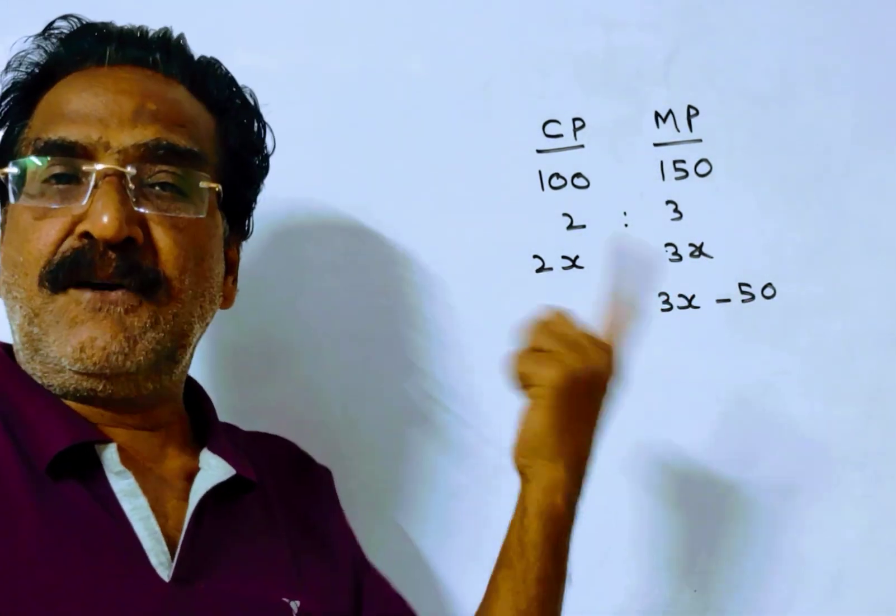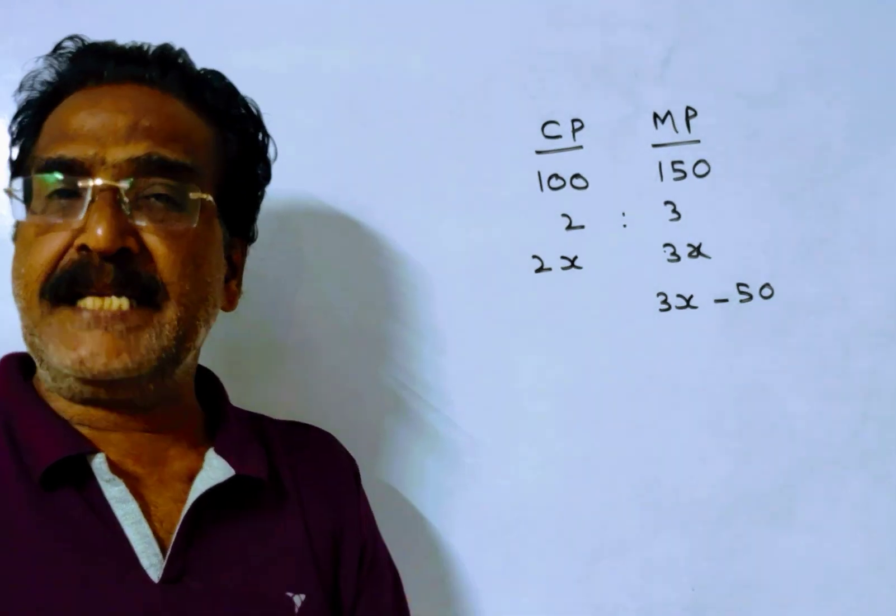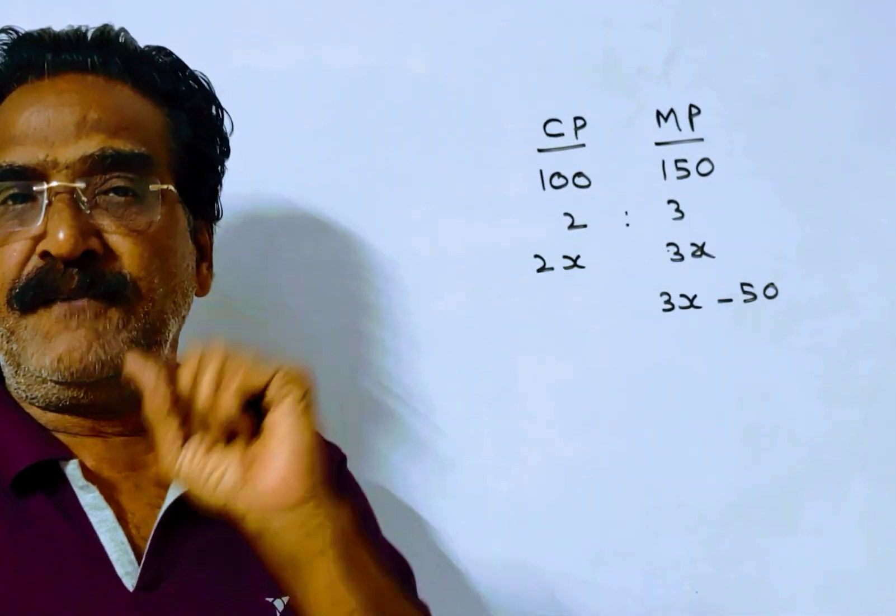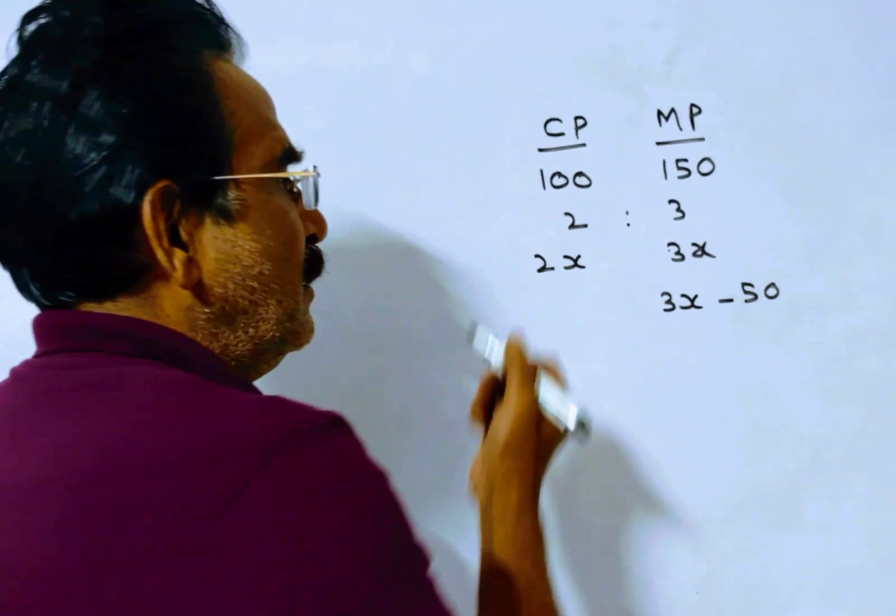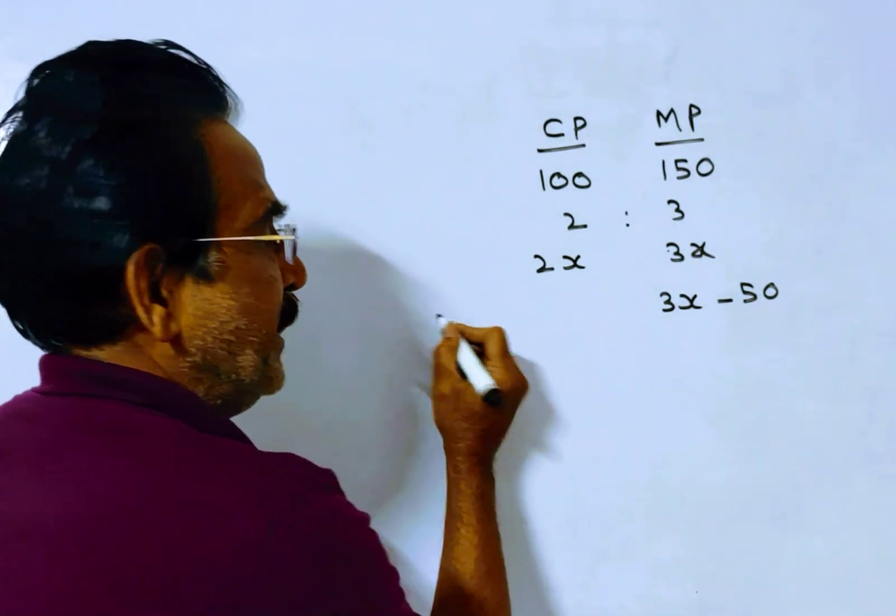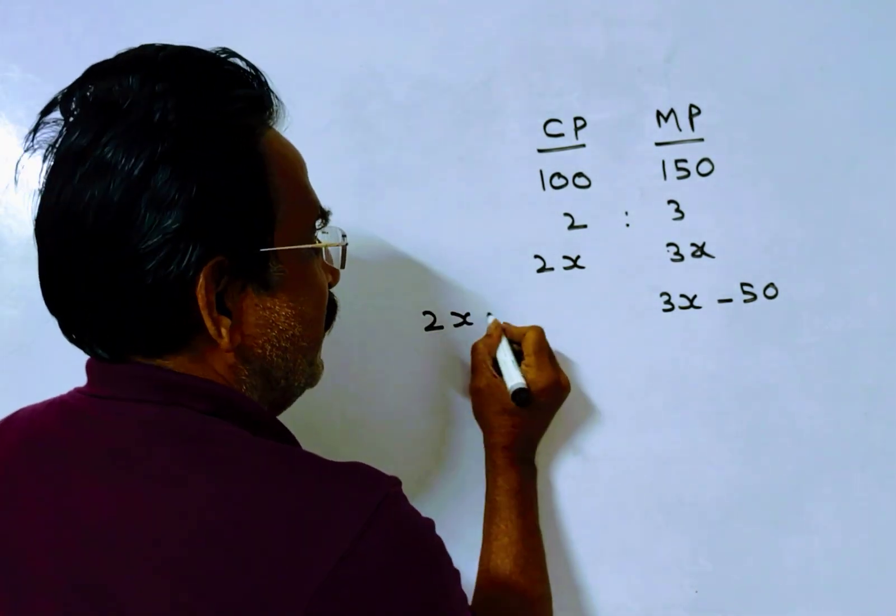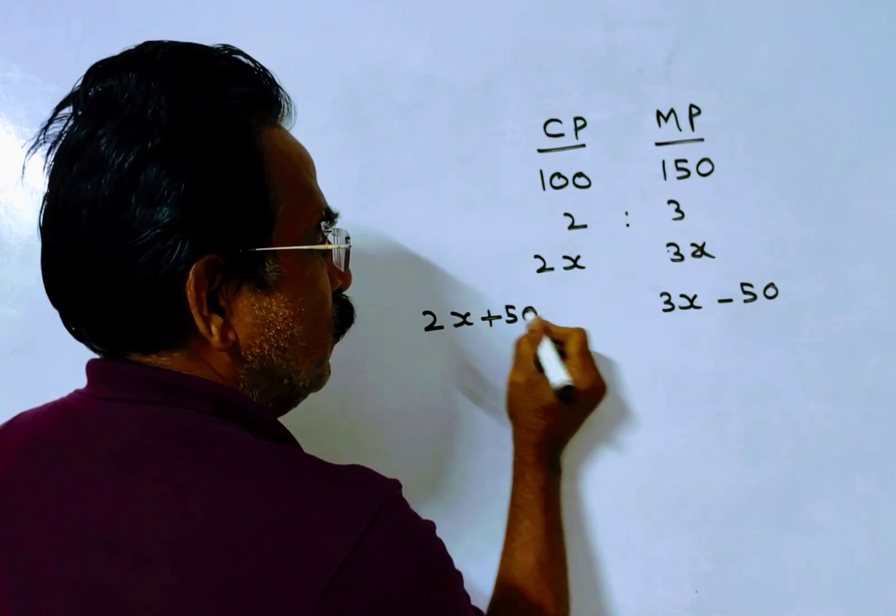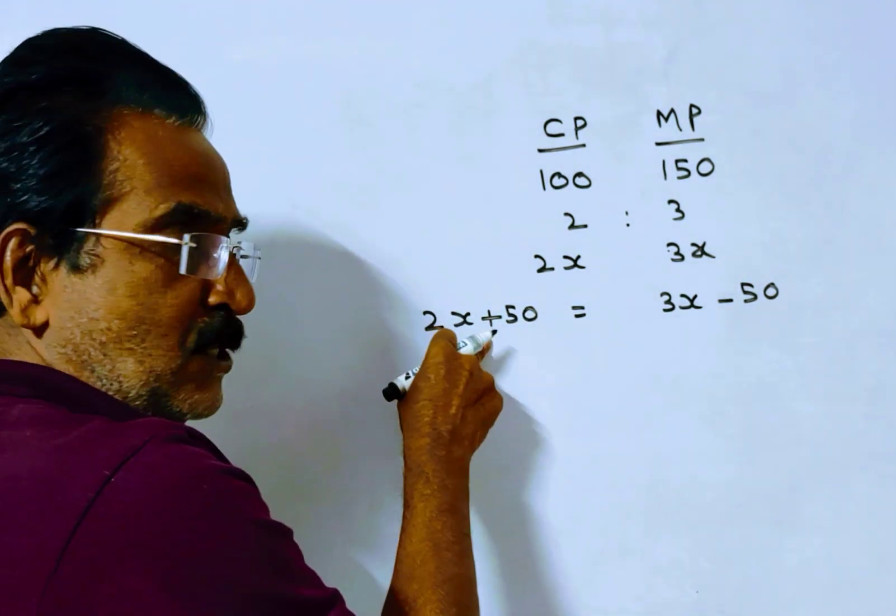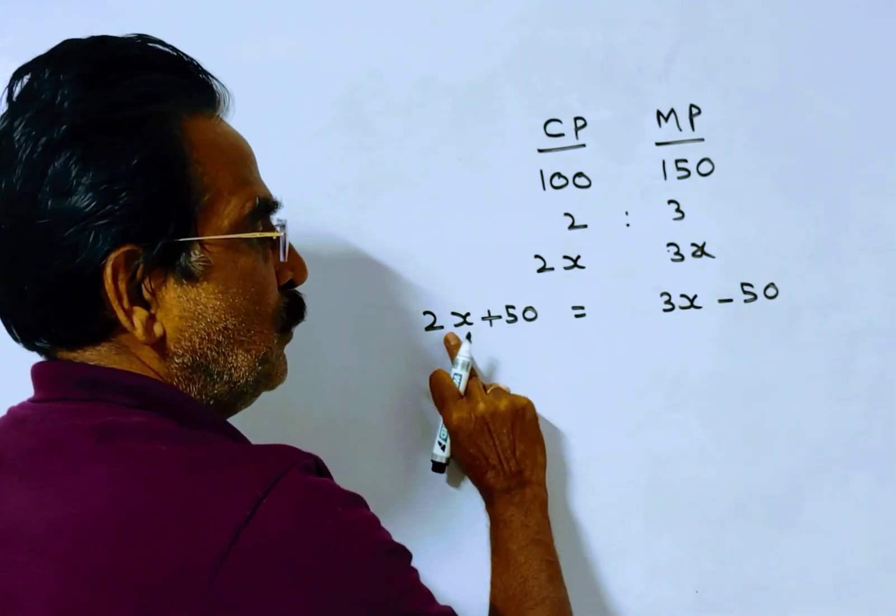If 50 rupees discount is given, he still makes a profit of 50 rupees. 50 rupees profit means cost price plus 50 gives selling price. This is selling price, this is also selling price.